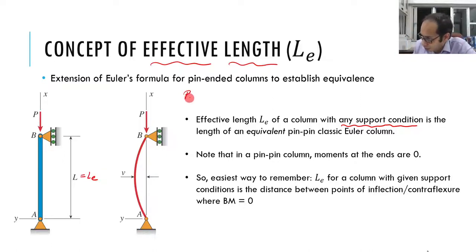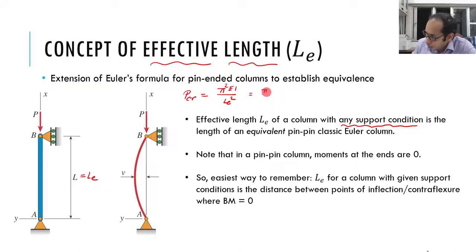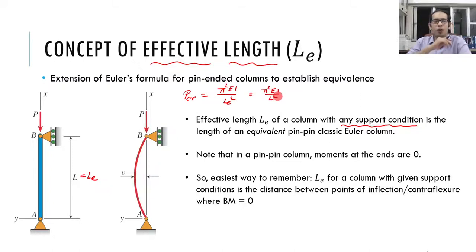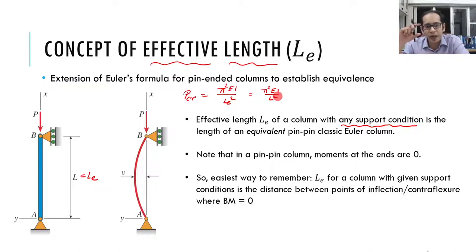So the general formula becomes PCR = π²EI / LE². For the pin-pin support condition, LE = L, so it boils down to PCR = π²EI/L². Now for the other support conditions, all we have to do is find the distance between the points of contraflexure, plug it back into this general equation, and we get the PCR for that support condition.